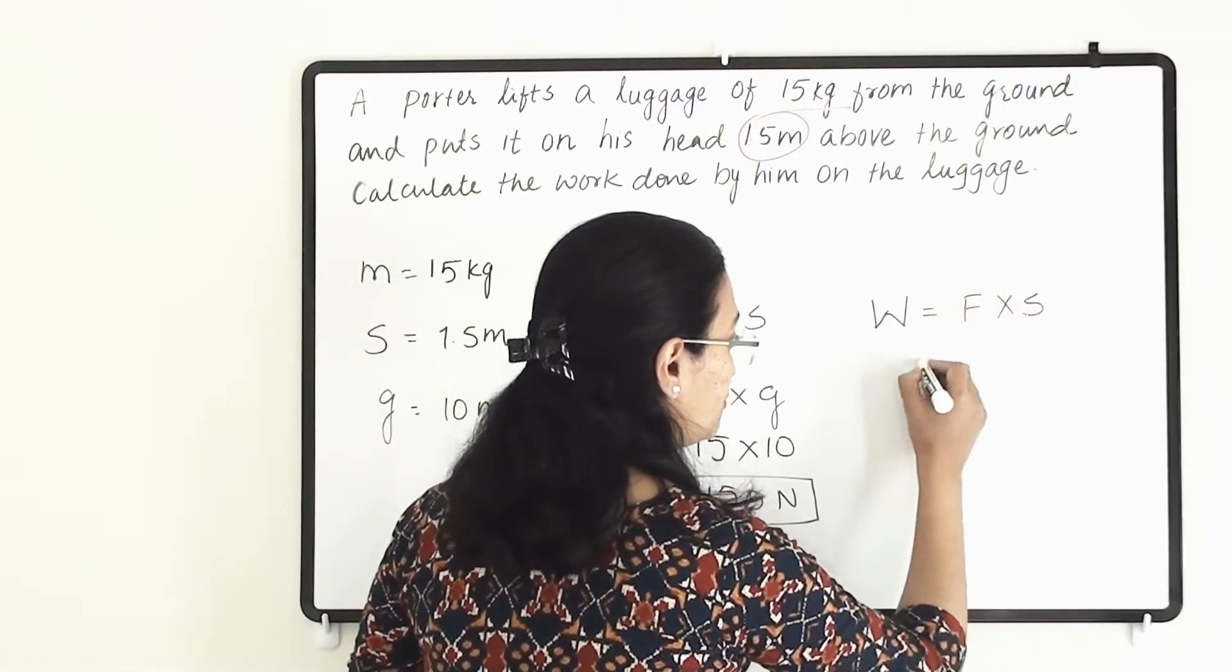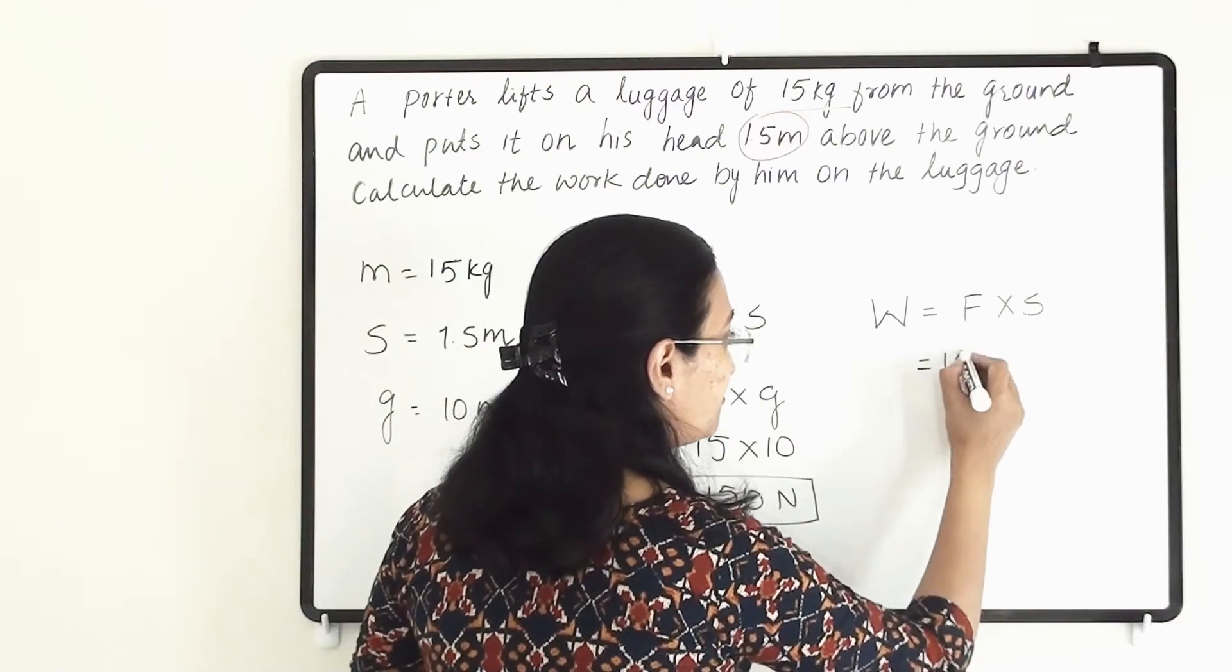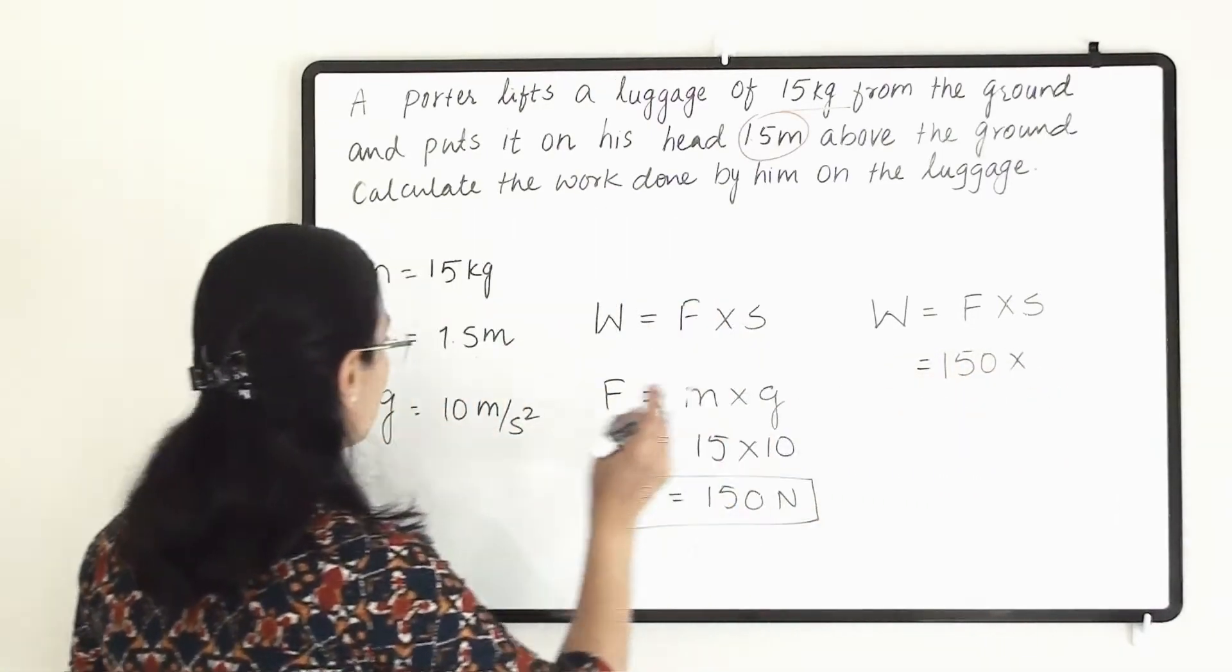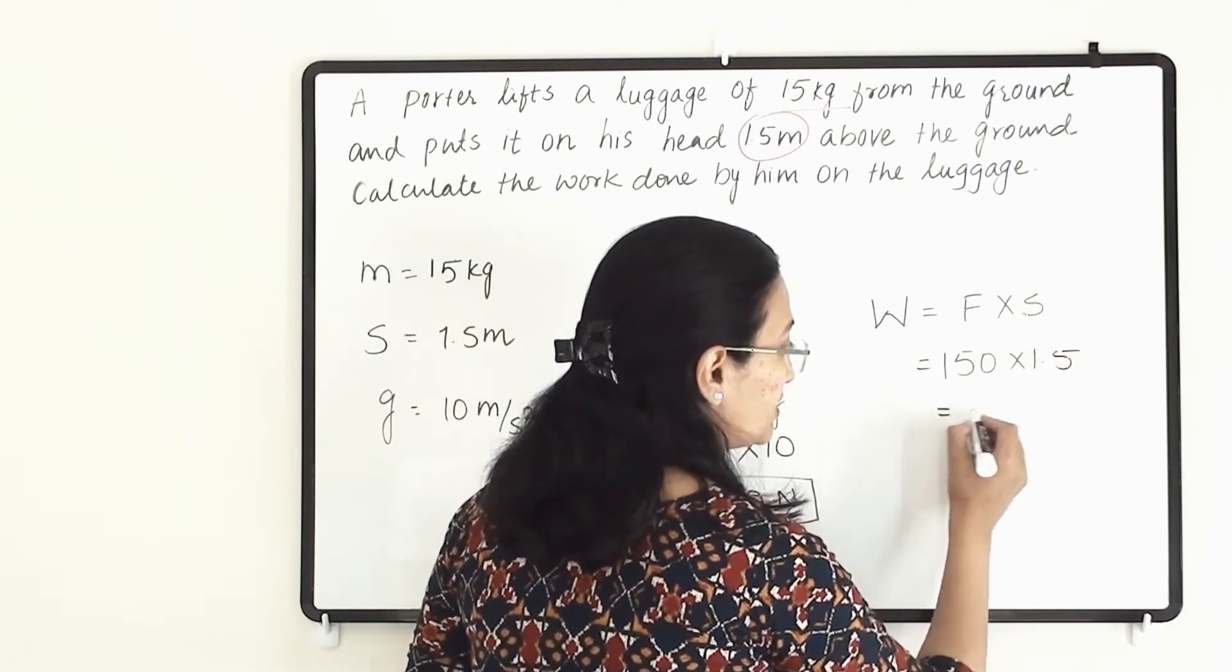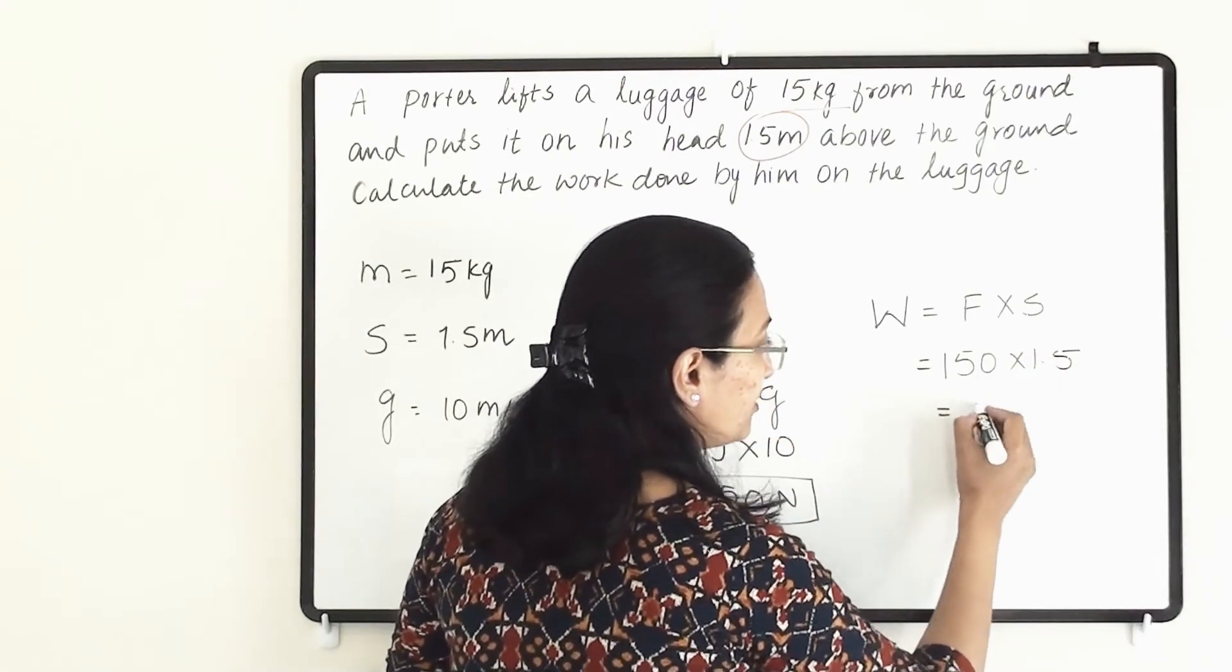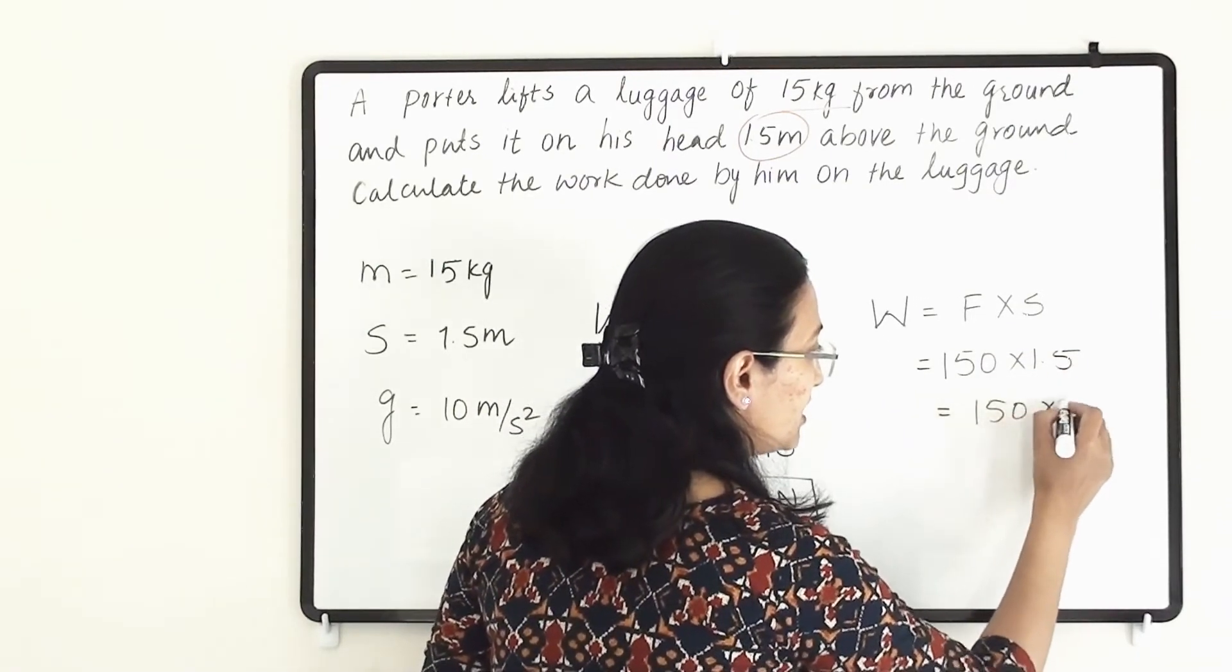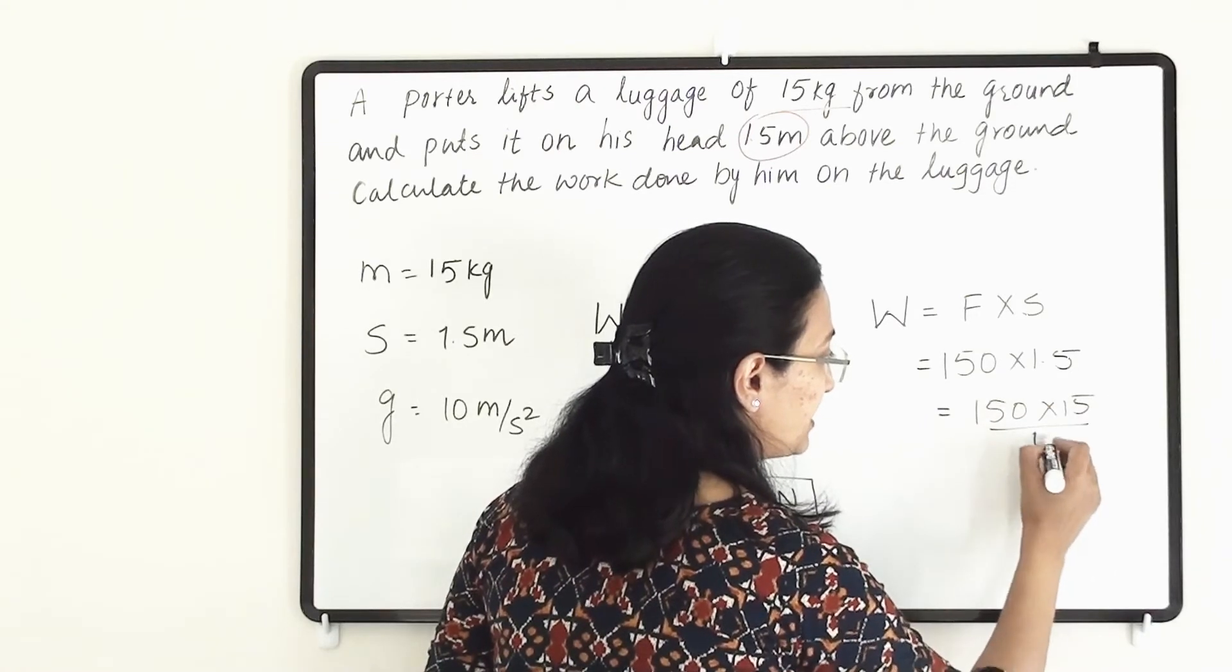So work equals to F into S. F is 150 into displacement, displacement is 1.5 meter. So here 150 into 1.5. So 150 into 15 divided by 10.